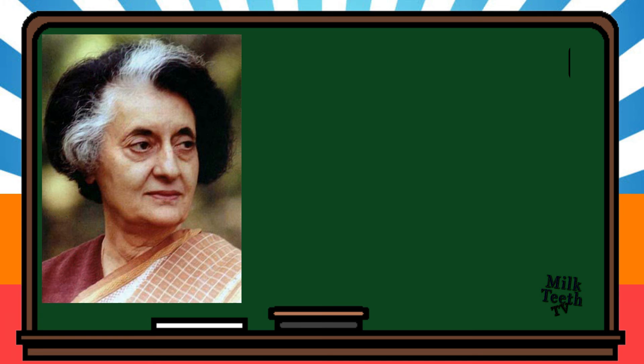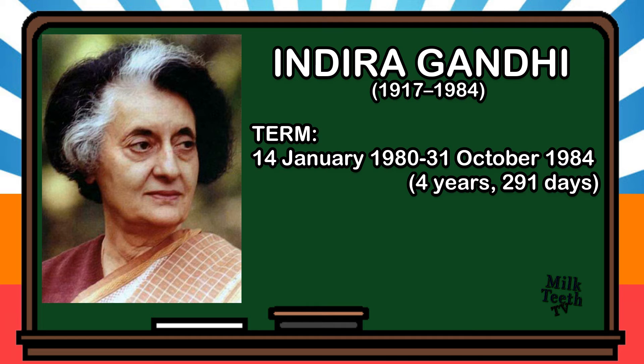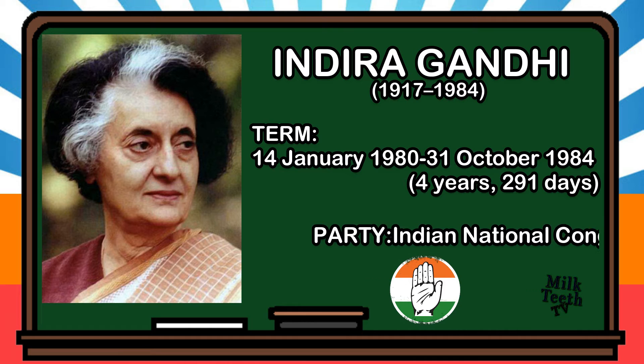Indira Gandhi swept back to power in 1980 when she became Prime Minister of India again until her assassination in October 1984. This time her term lasted for four years and 291 days. Party: Indian National Congress.